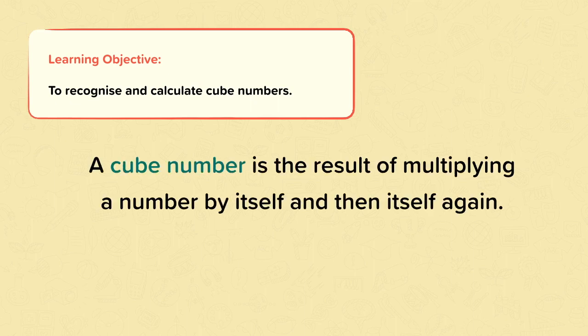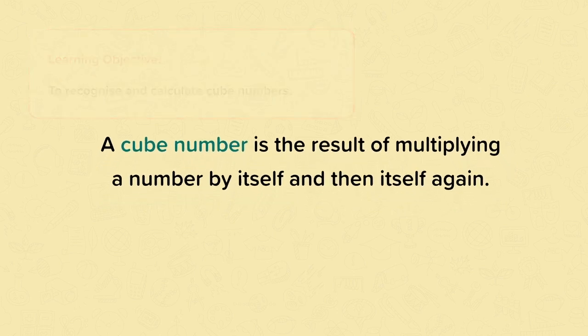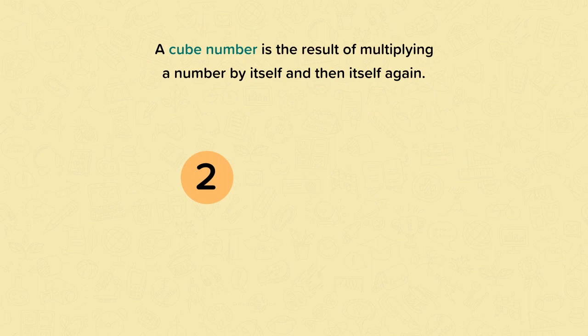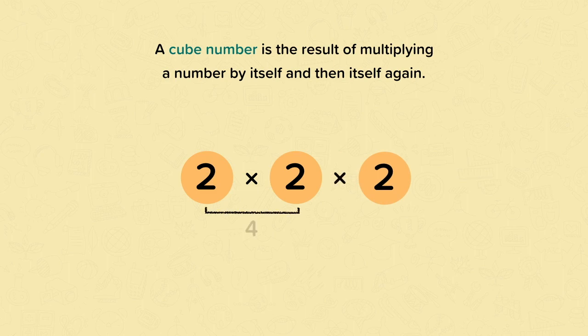A cube number is the result of multiplying a number by itself and then itself again. So let's start with 2. We're going to multiply it by itself and then itself again. So first of all, let's start with 2 times 2. That's 4.